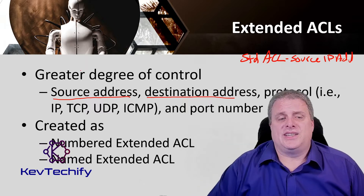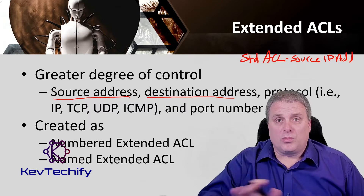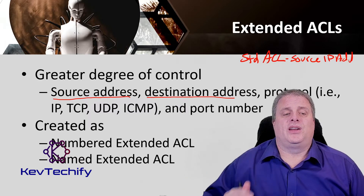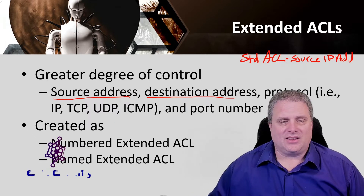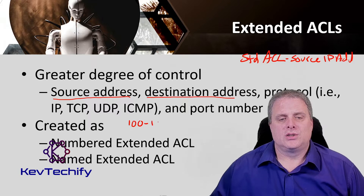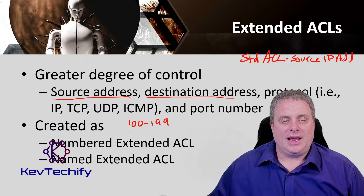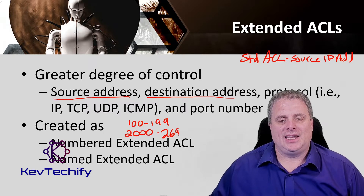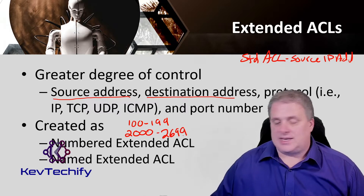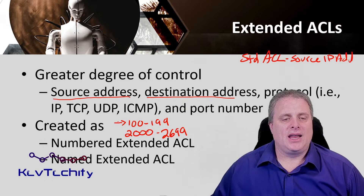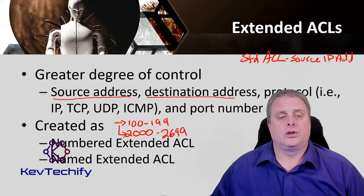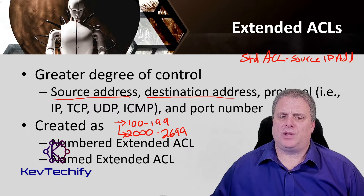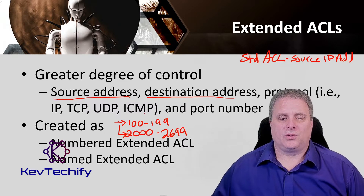An extended ACL can be created as a numbered one or as a named one. The numbers for an extended ACL go from 100 to 199 and 2000 to 2699. Typically we try to keep it in the 100 to 199 range. If you have a lot of ACLs in your organization, you can use that second range, but most of the time we keep them in the 100 to 199 range.